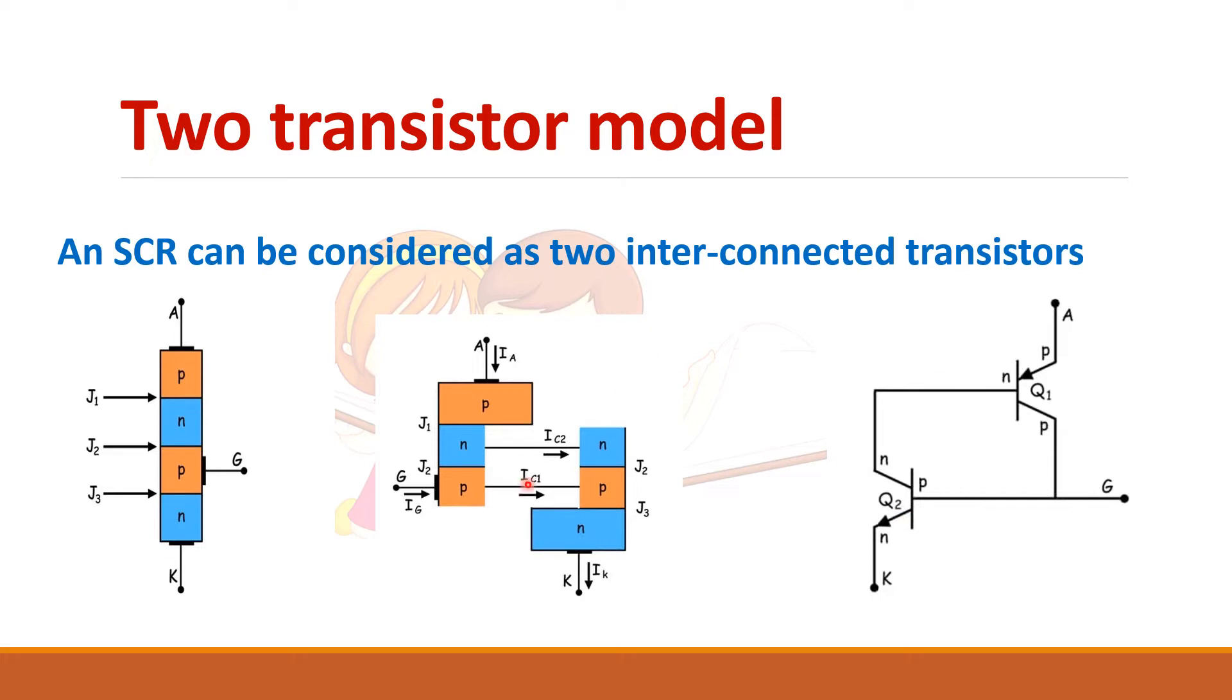So why do we do this analysis? First thing to understand the operation of the SCR. Second thing, you will learn why you are applying a pulse as gate signal. The third thing is why gate signal is removed after your SCR goes into conduction. So you can get the answers for these questions.